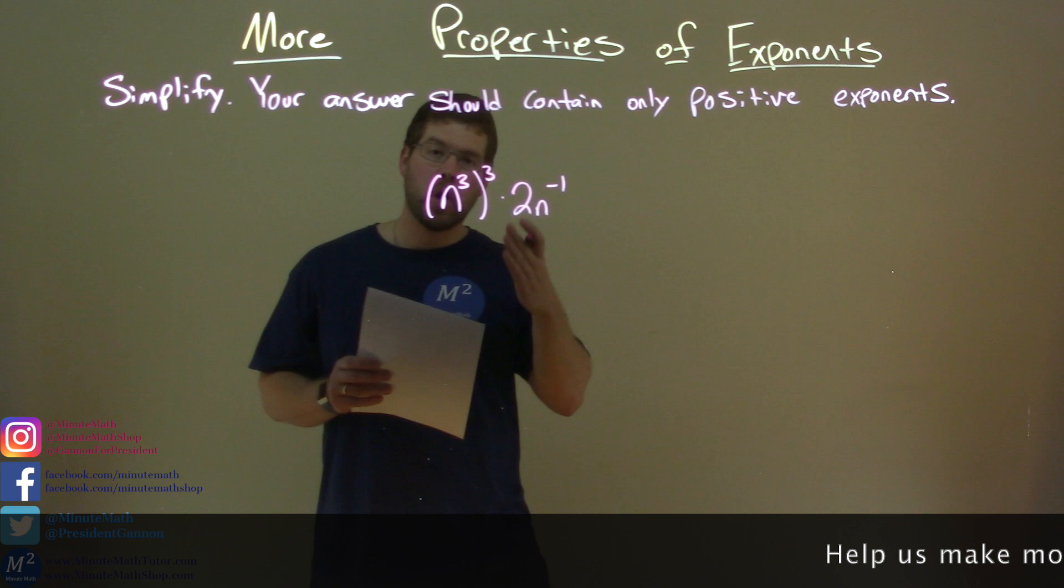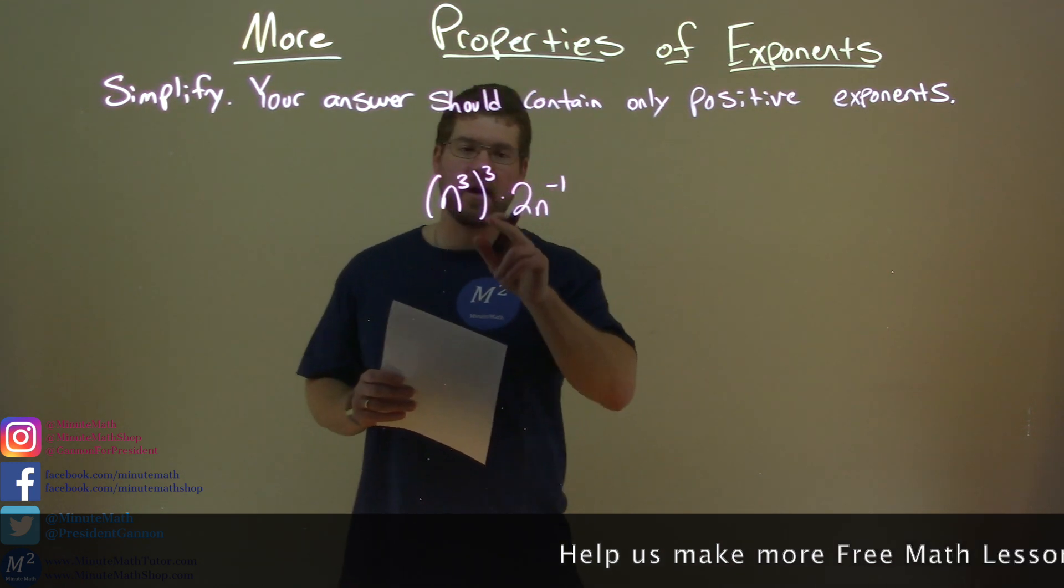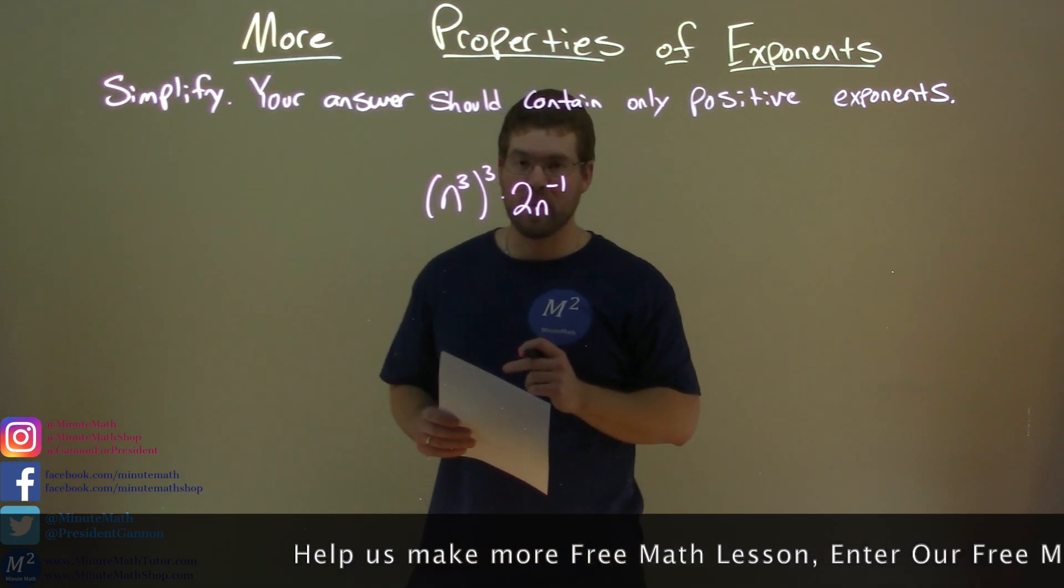n to the third power, all to the third power, times 2n to the negative one power.